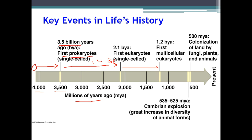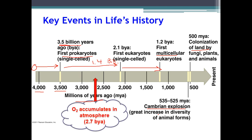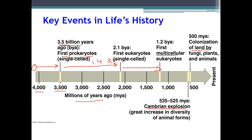Then 0.9 billion years ago, we have some of those eukaryotic organisms kind of having multiple cells — so we have multicellular eukaryotes. And then only 500 million years ago, we finally have colonization of land, by fungus, by plants, and by animals. Throughout some of that time, we have some really important events like the Cambrian explosion. This was basically a gigantic event of adaptive radiation where a ton of organisms — specifically animals — diversified and speciated, so we just saw a huge increase in the diversity of life during that explosion. It's an explosion of diversity.